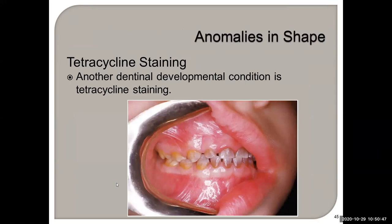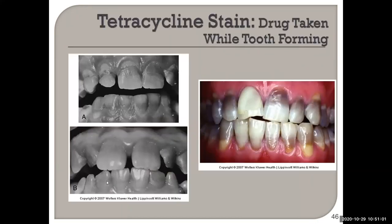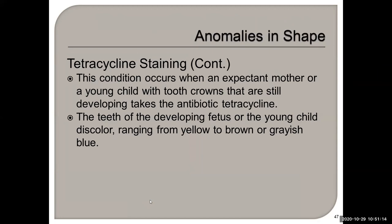Tetracycline staining can affect both permanent and deciduous teeth. We're not seeing this hardly at all anymore because we now know the cause, and pediatricians are not prescribing the cyclines during tooth formation. It occurs when an expectant mother or young child with the tooth crown still forming is given the antibiotic tetracycline.